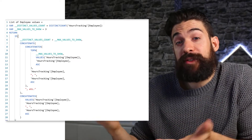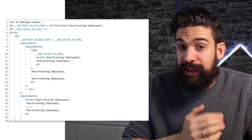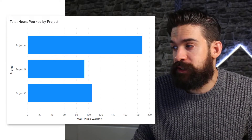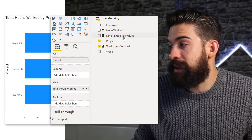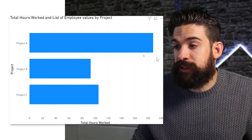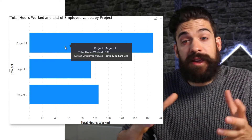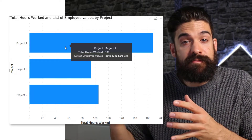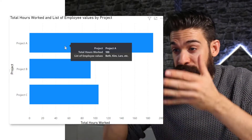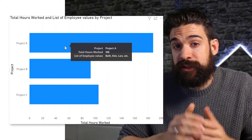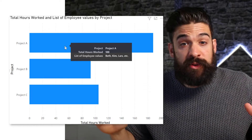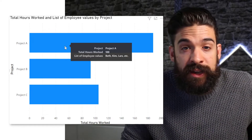Now let's have a look at the DAX code that was created for us. You can see it's quite complex, and the question is: does it have to be this complex, and does it do what we want it to do? So I'm going to go back to my bar chart and use the list of employee values as my tooltip. Now hovering over project A, it does give me three values: Beth, Kim, and Lars. However, these are not the employees with the most working hours for that specific project, so we have to make some changes.